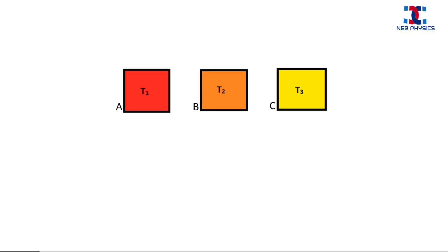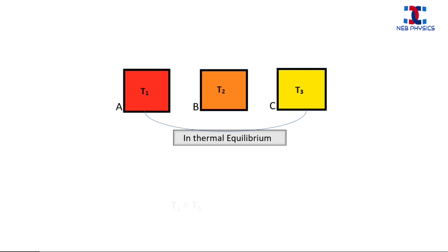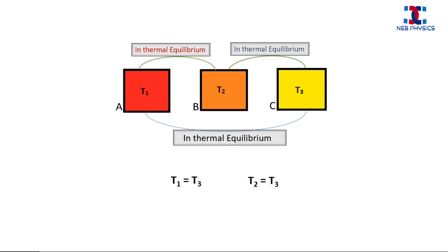Now let's understand it better. Suppose there are three bodies A, B, and C at temperatures T1, T2, and T3 respectively. If A is in thermal equilibrium with C, that can be written as T1 equals T3, because during thermal equilibrium the temperatures of the bodies are the same. And if B is in thermal equilibrium with C, that can be written as T2 equals T3. Then according to zeroth law, A must be in thermal equilibrium with B, written as T1 equals T2. Combining all, we get T1 equals T2 equals T3, meaning all bodies A, B, and C are in thermal equilibrium with each other.